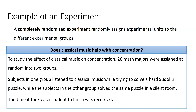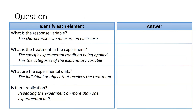What makes this a completely randomized design is that 26 math majors were randomly assigned to either be in a room with music or a room without. Based on this, let's identify some of the different elements. I'd encourage you to pause the video, answer these on your own, and come back once you've gotten your thoughts down.